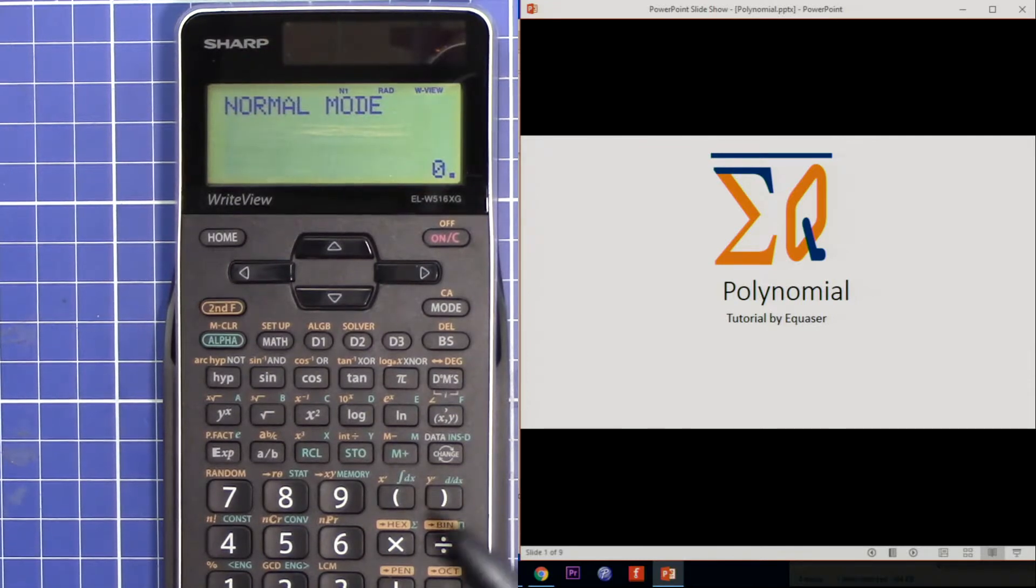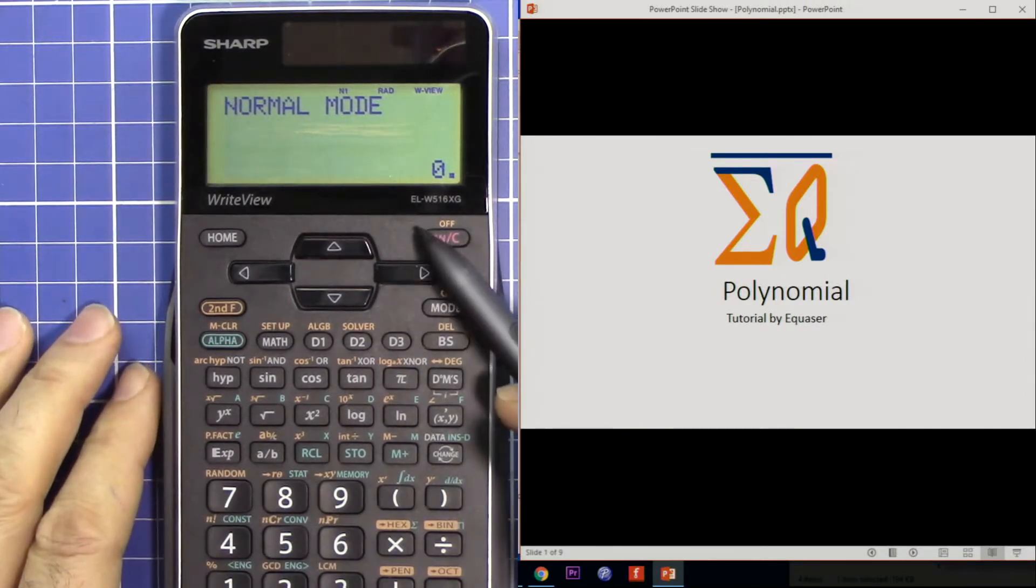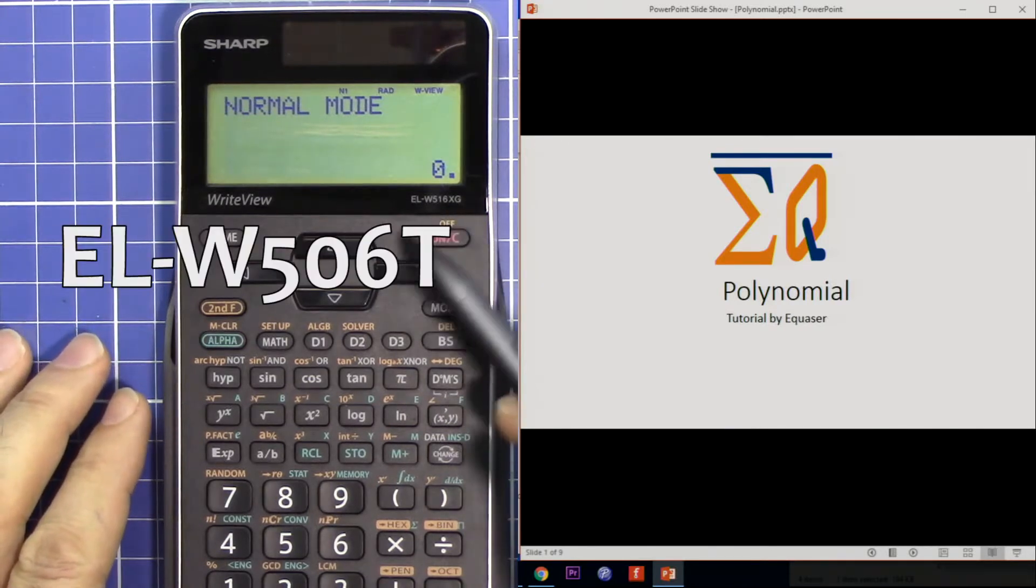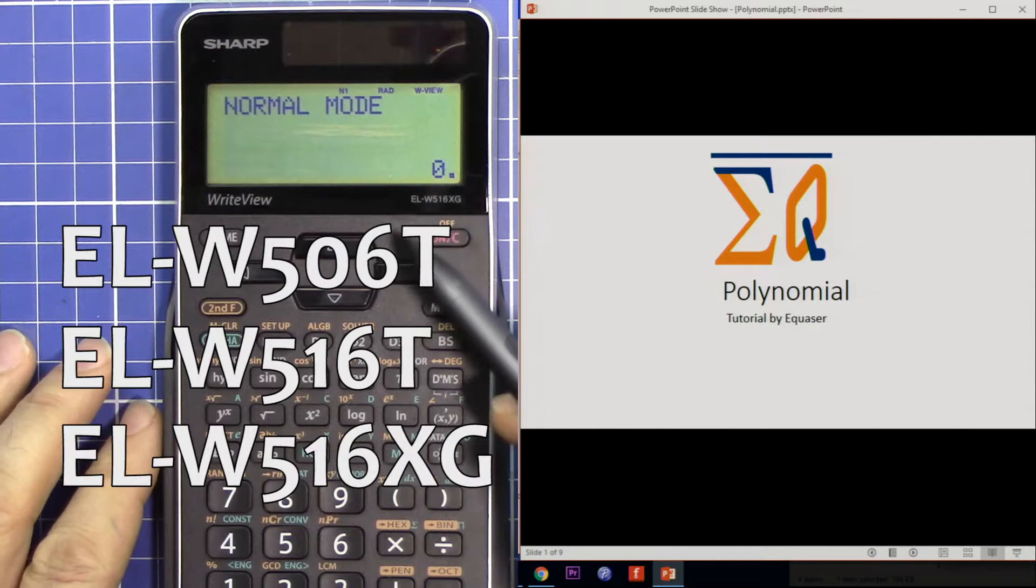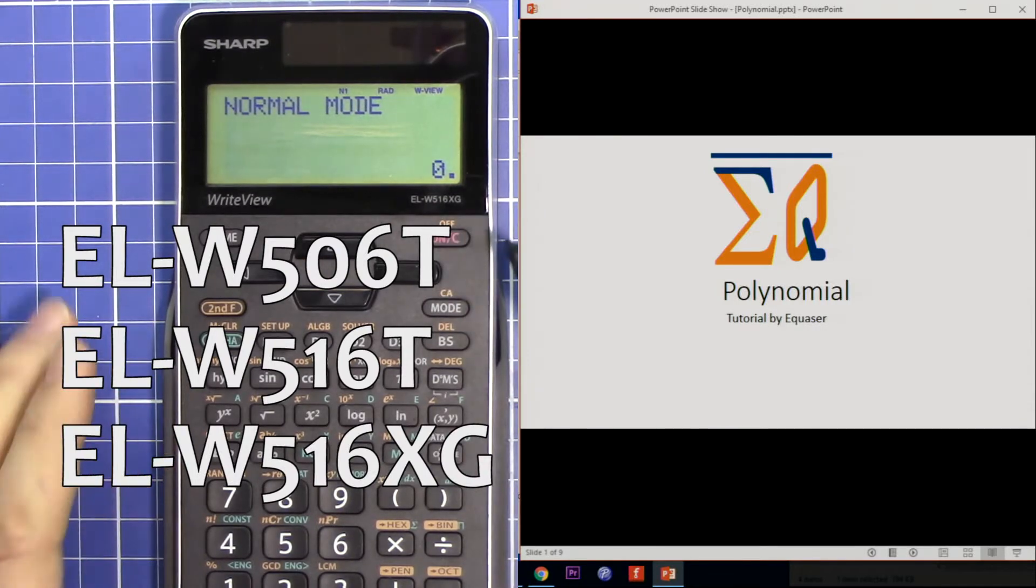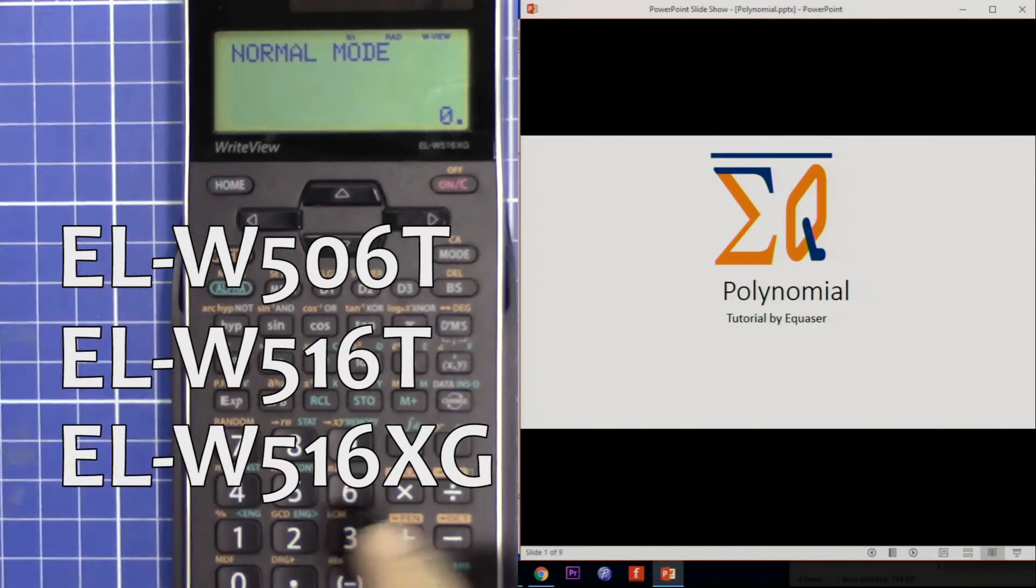Hi, welcome to Equasor. In this video we are going to evaluate polynomials of second and third degree using Sharp scientific calculators: EL-W516X, EL-W516T, and EL-W506T. If you have the XG model, that doesn't matter—all of them can do it. Let's get started.